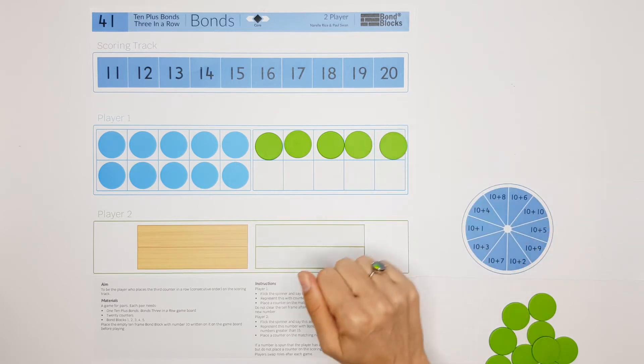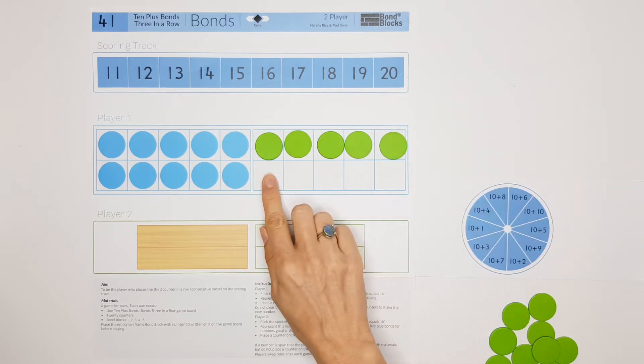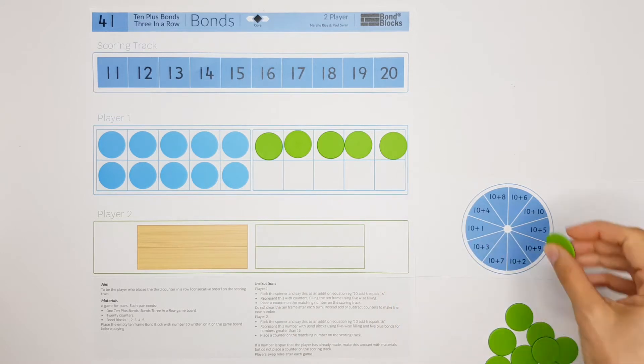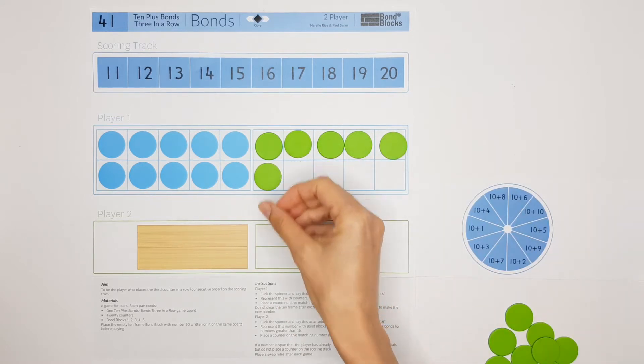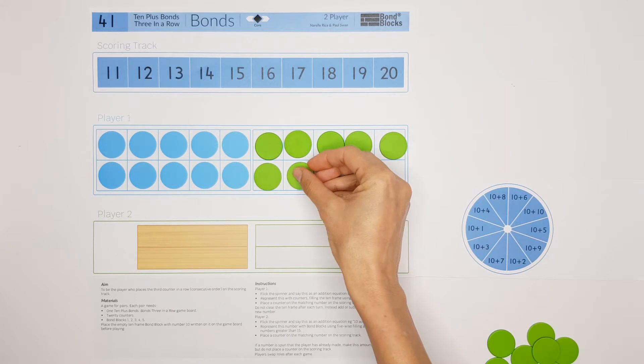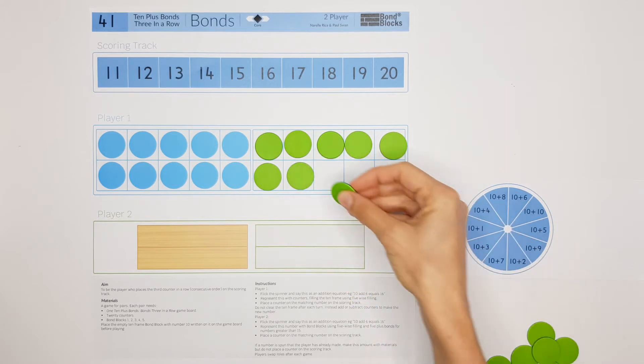One more counter would be 16, 17, and then 18. I can see that two more would make 20.